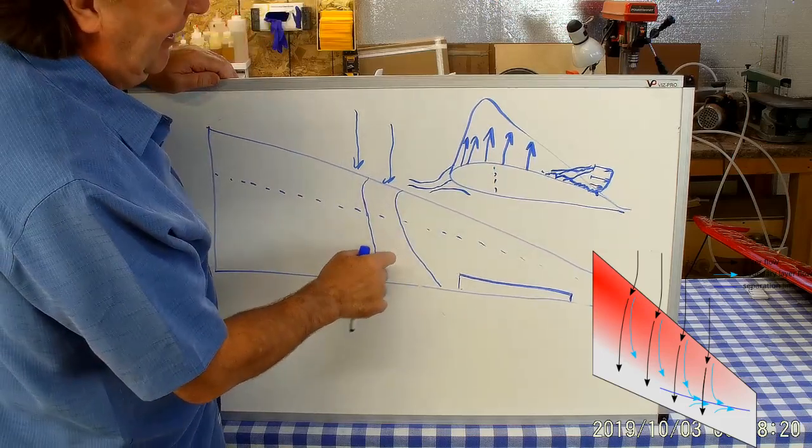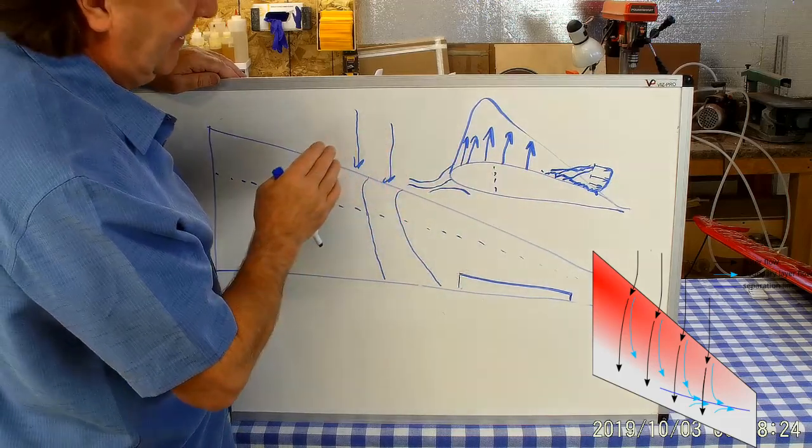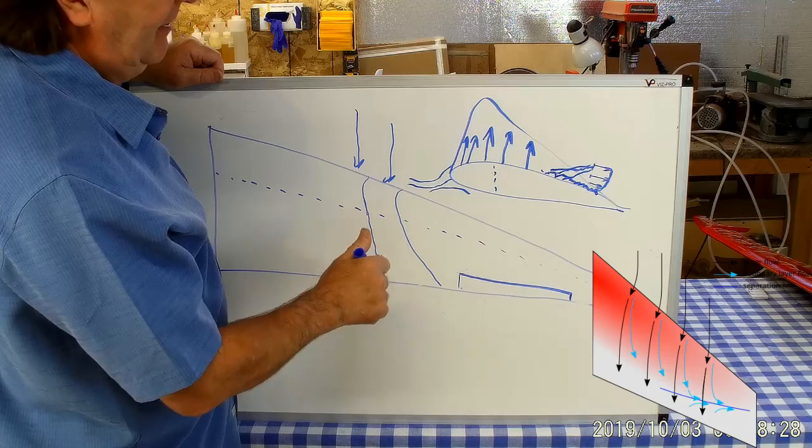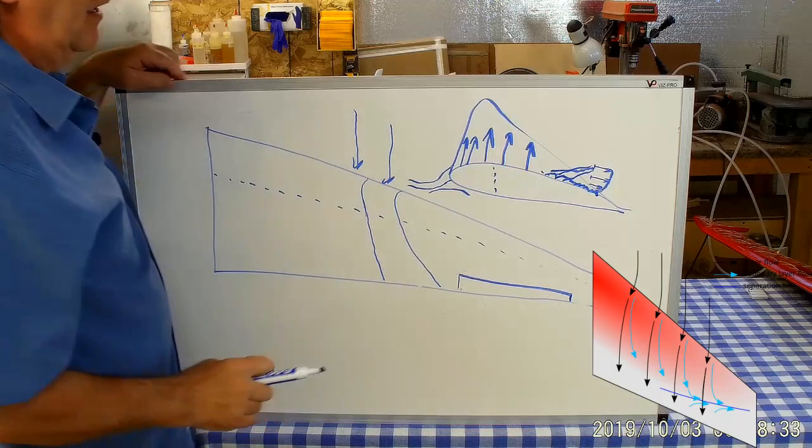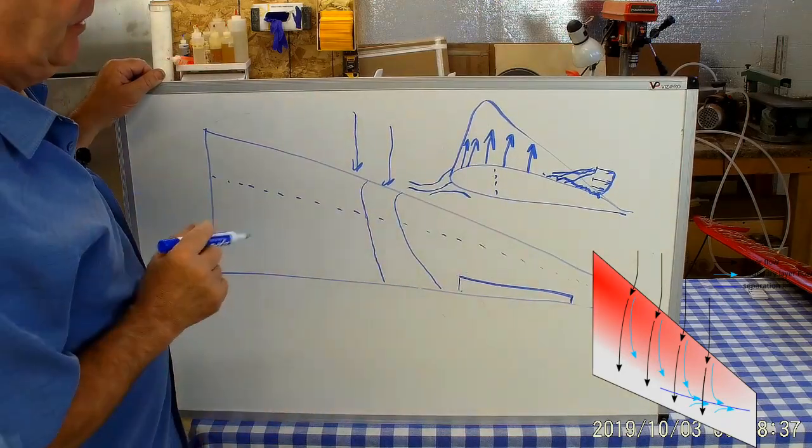If they go back along the wing, they're enduring all of this pressure recovery region here, trying to get back up to the conditions that existed at the leading edge by the time they get to the trailing edge. Because of the pressure distributions on here and because of the viscosity of air and other phenomena, the molecules want to take the easy way out and they want to run for the wing tip.